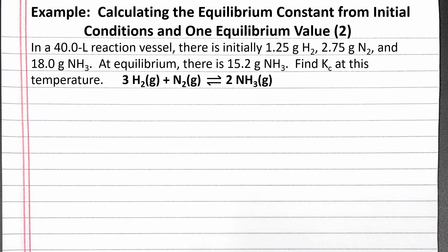In this example, we calculate the equilibrium constant from initial masses of reactants and products and one equilibrium mass. Our problem reads: in a 40.0 liter reaction vessel, there is initially 1.25 grams hydrogen, 2.75 grams nitrogen, and 18.0 grams ammonia. At equilibrium, there is 15.2 grams ammonia. Find Kc at this temperature.